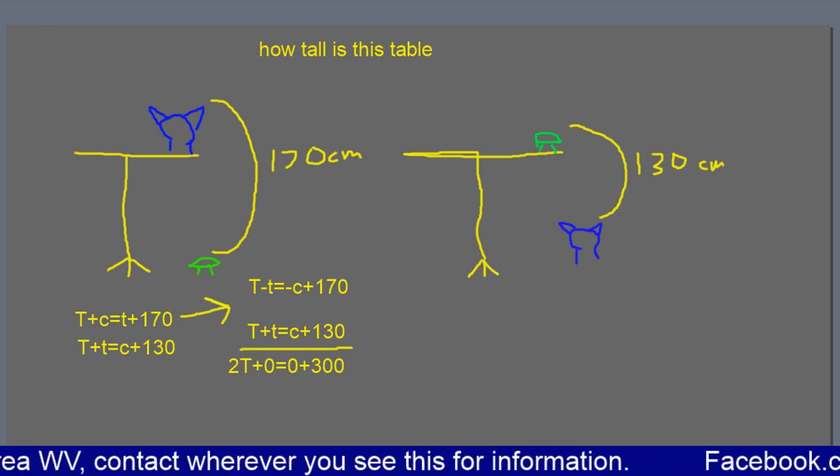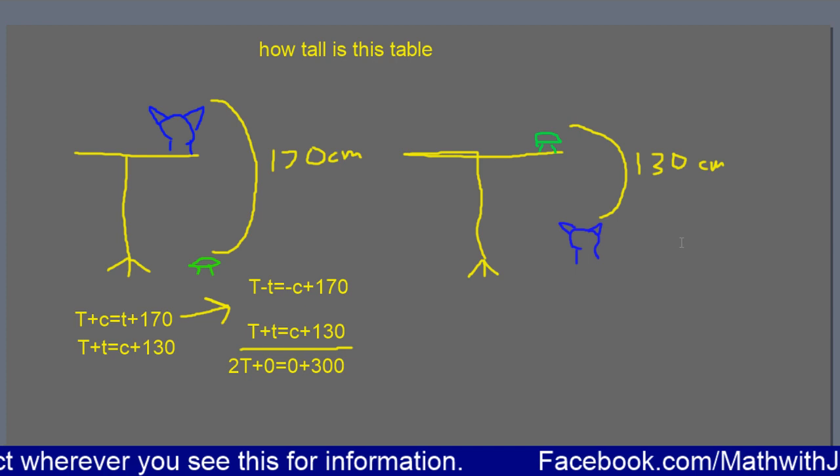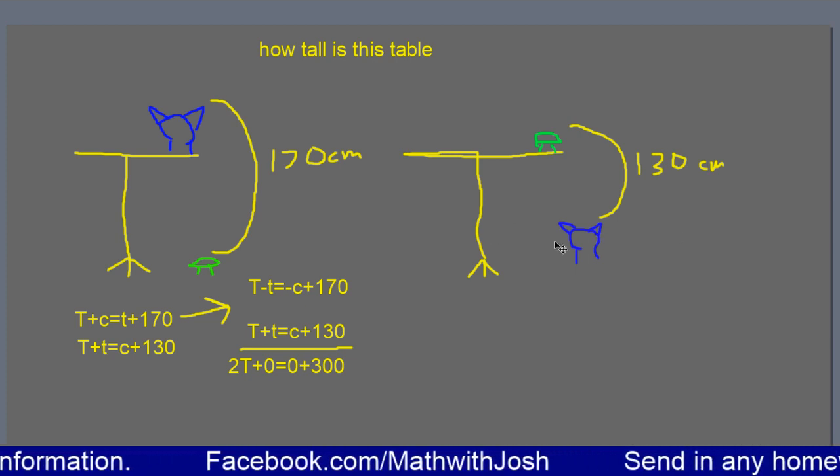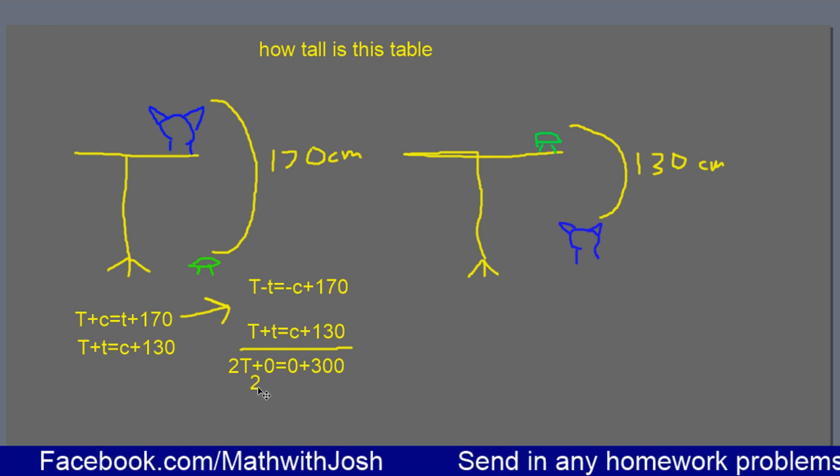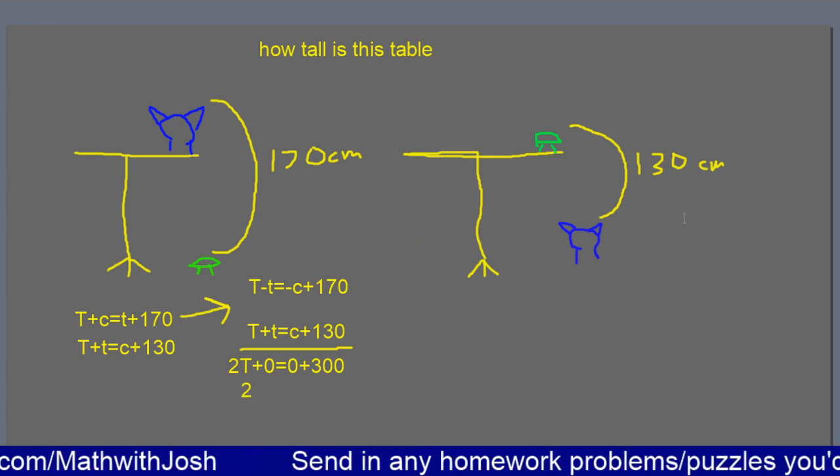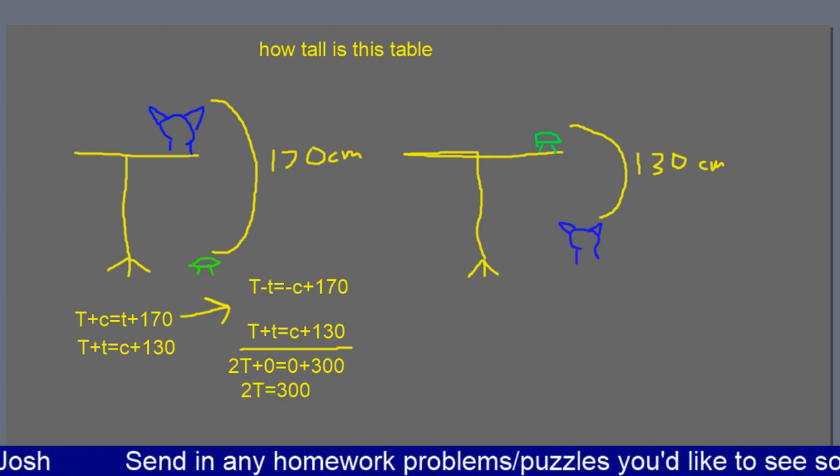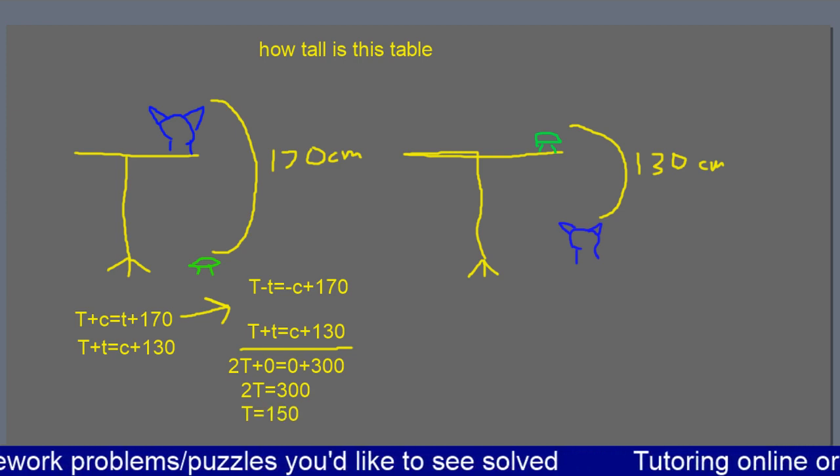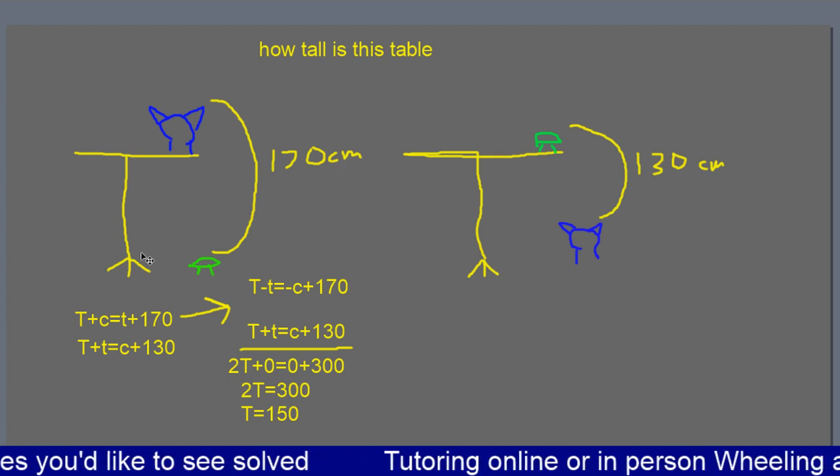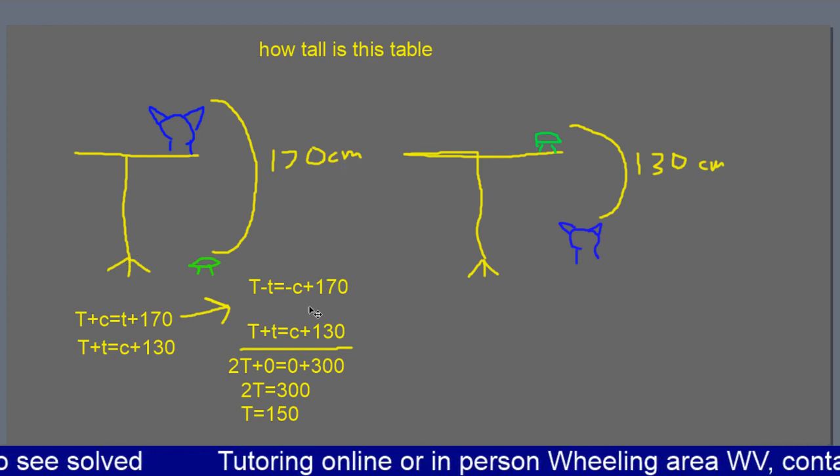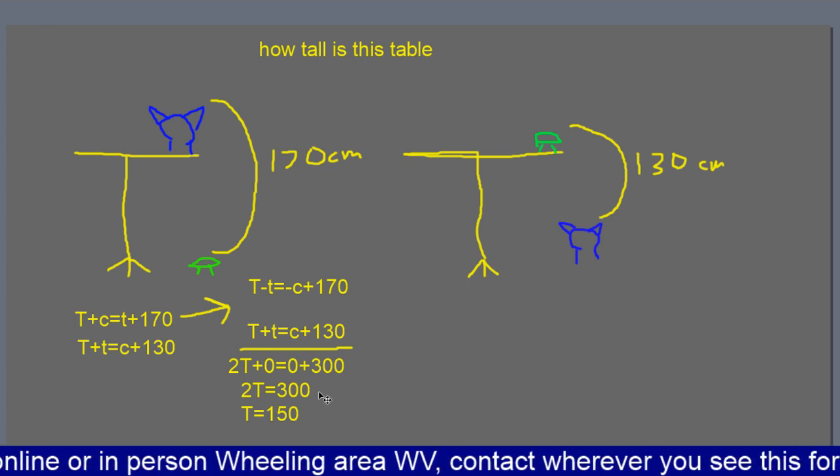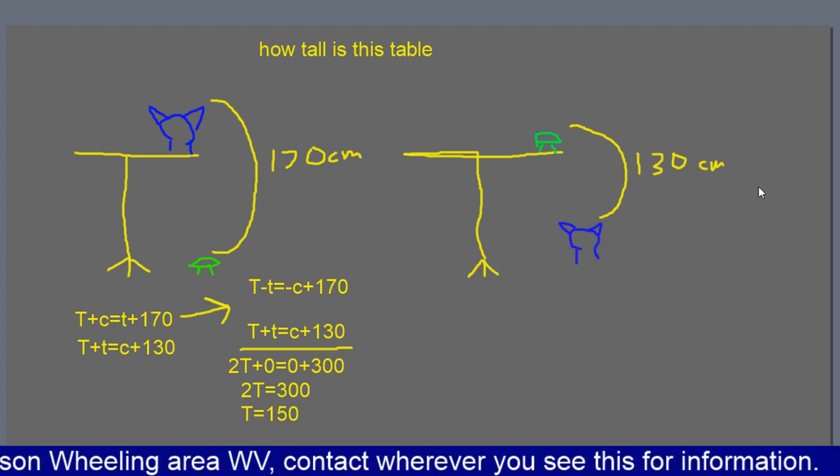Then the next step, if we just simplify this a little bit is we're going to get that two T equals 300. And then we'll get that T equals 150. And if you remember capital T, that was our table height we were looking for. So in this case, we won't need to do any additional steps.